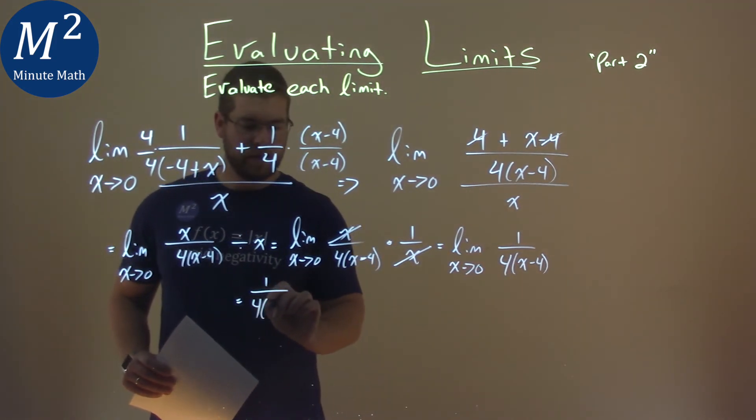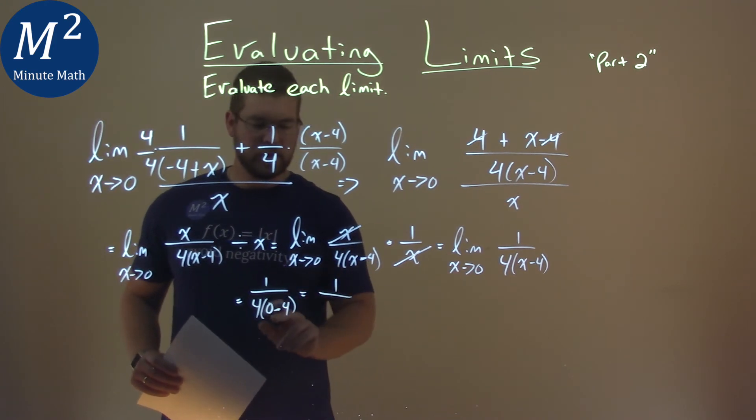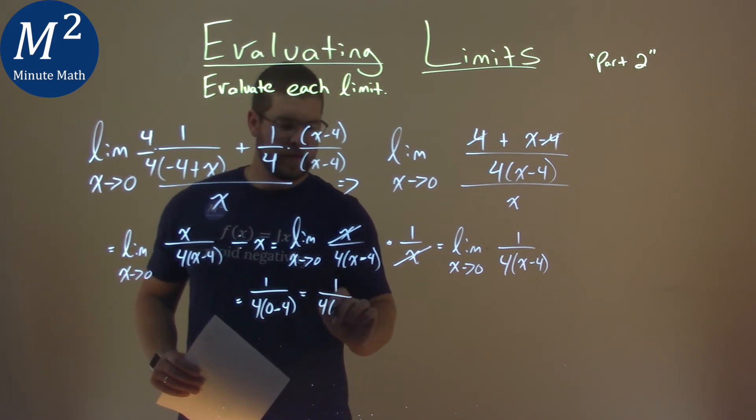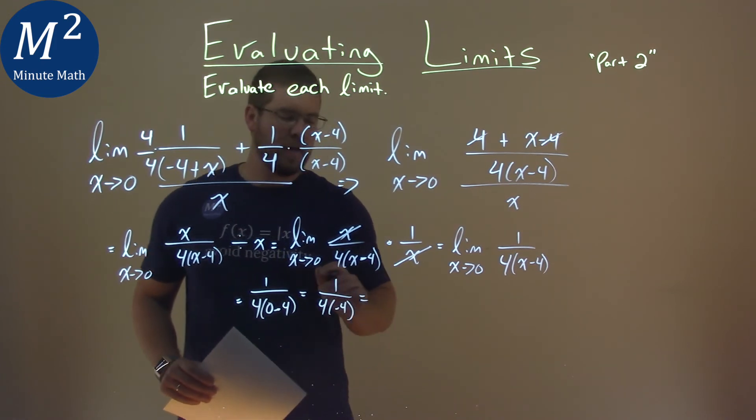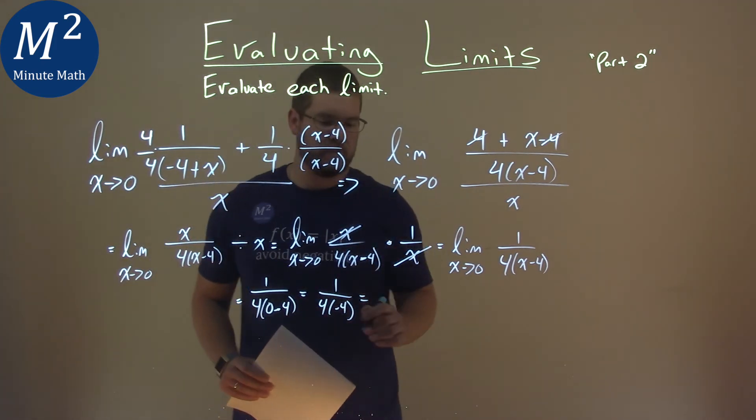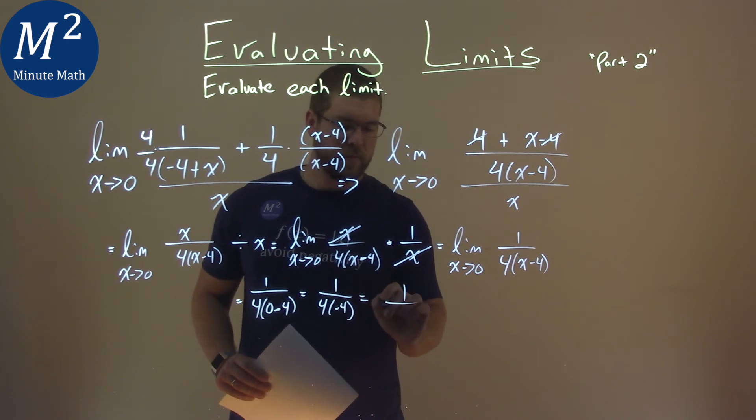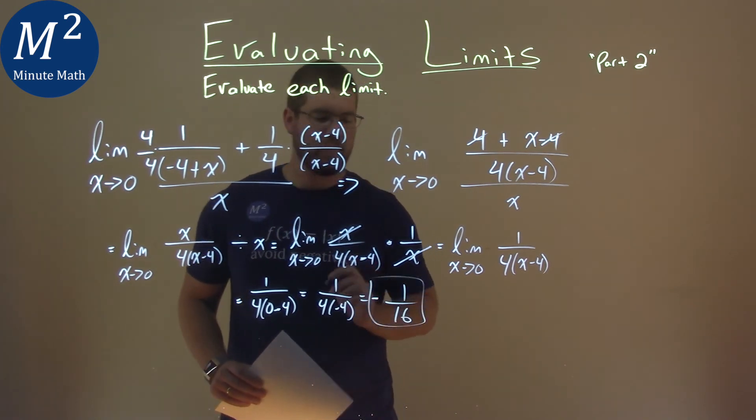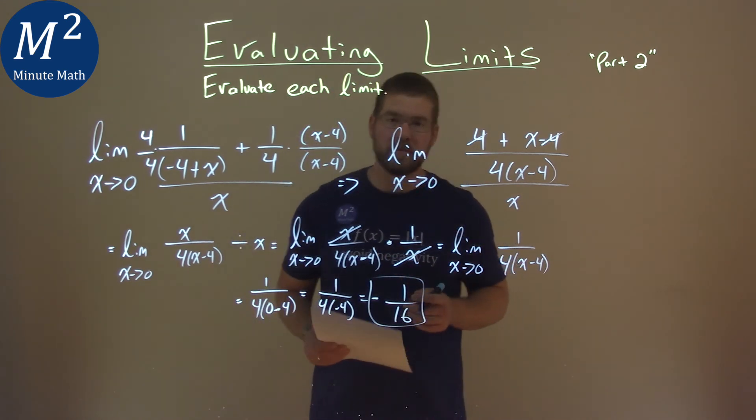We have 1 over 4 times 0 minus 4. Well, 0 minus 4 is negative 4. So we have 4 times negative 4. And 4 times negative 4 is negative 16. So we have 1 over, let's put a negative over here, negative 1 16th. And that is our final answer.